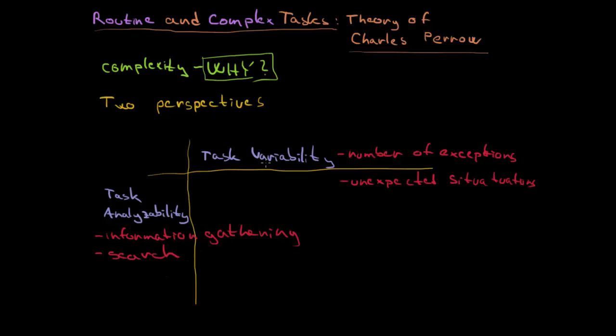And when you put these two things, the task variability and the task analyzability, you already have your theory. So you can have low task variability here and high here. So we are distinguishing between the tasks.